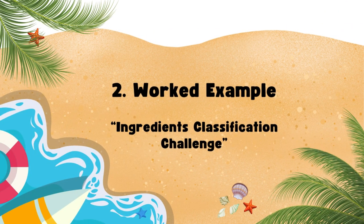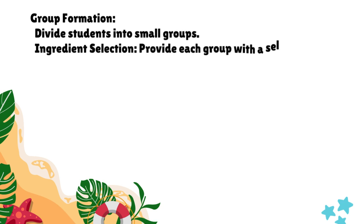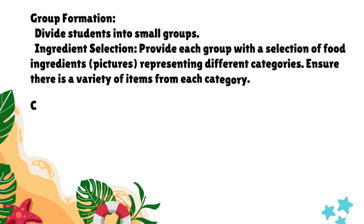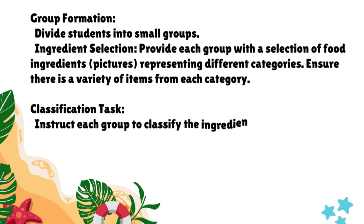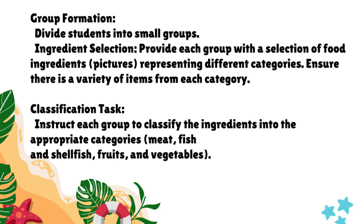Worked example — Ingredients Classification Challenge. Group formation: Divide students into small groups. Ingredient selection: Provide each group with a selection of food ingredient pictures representing different categories, ensuring variety from each category. Classification task: Groups classify the ingredients into the appropriate categories — meat, fish and shellfish, fruits and vegetables.